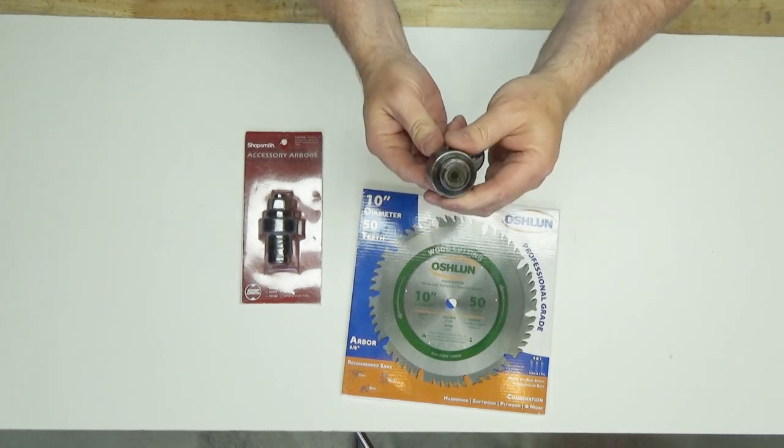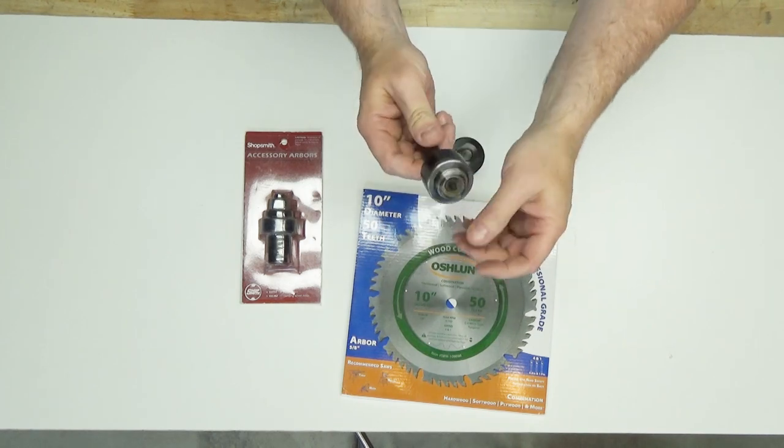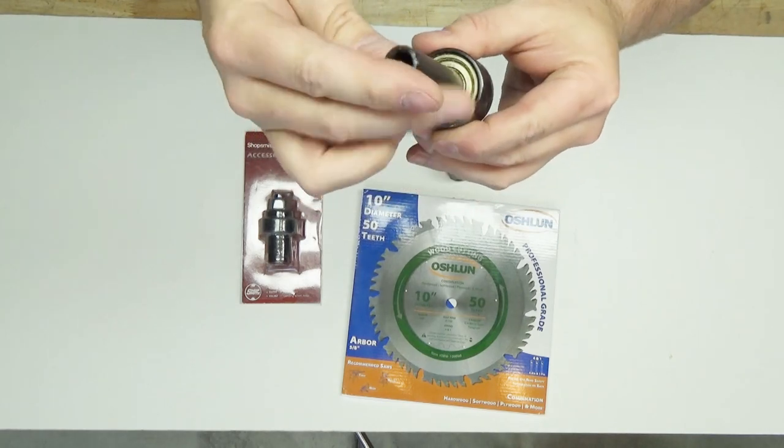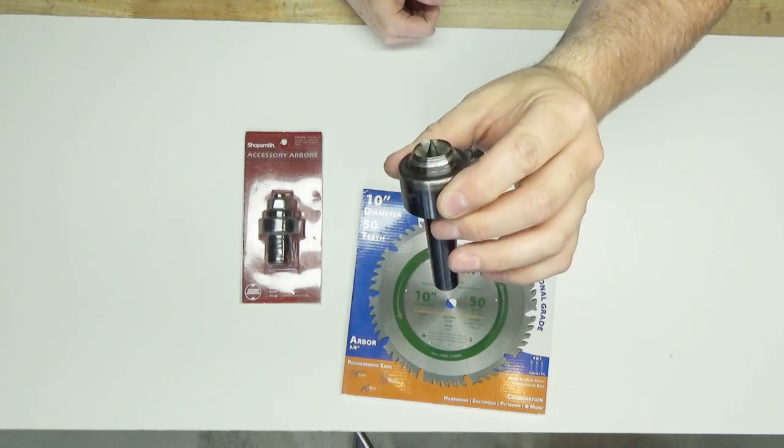Standard with the ShopSmith is a cup center that is a dead center, meaning it doesn't spin on a bearing. This is a life center for the lathe and it spins on a bearing. That is way more enjoyable to use than the dead center.